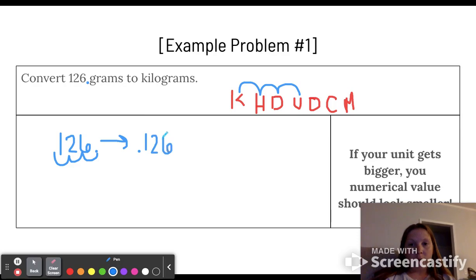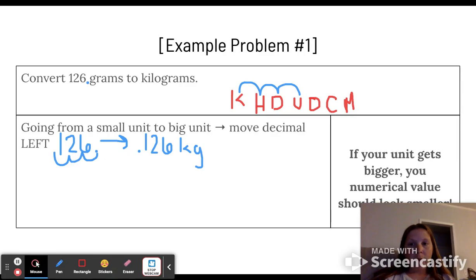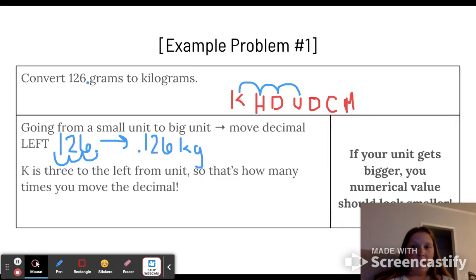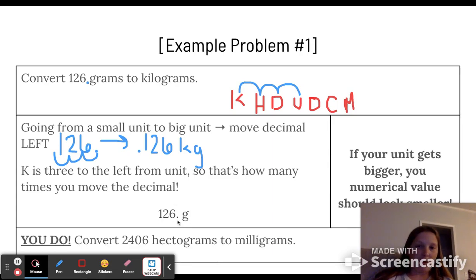We're going to take our decimal and move it one two three to the left. So in 126 grams we have 0.126 kilograms. When going from a small unit to a big unit, you move your decimal to the left. K is three units to the left from unit, so that's how many times you move your decimal. Now you can try this example at the bottom: convert 2406 hectograms to milligrams.